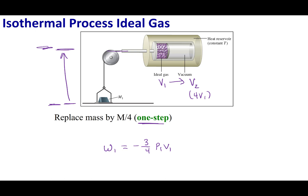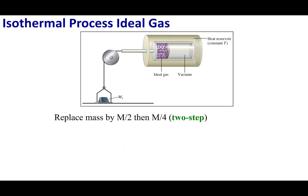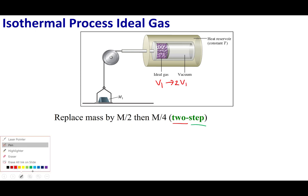Let's do this process slightly differently. I'm going to do this same expansion but in two steps. To fully lift my mass I need to expand to four times the volume, but first I'll expand to two times my volume, then after that I'll go the full expansion to four times my volume. So I'm lifting this mass in two steps — halfway up in step one, and the whole rest of the way in step two.